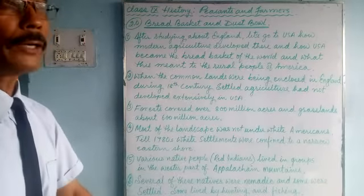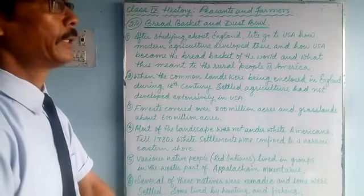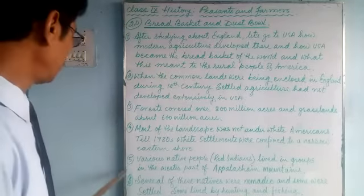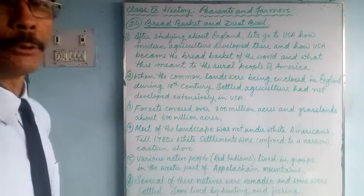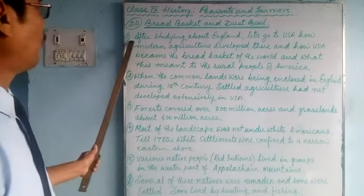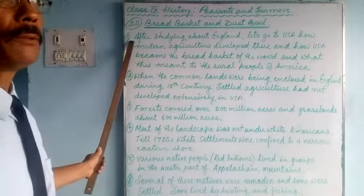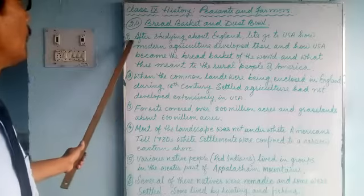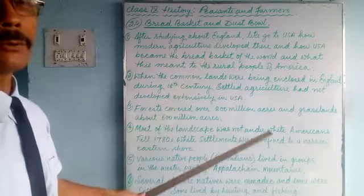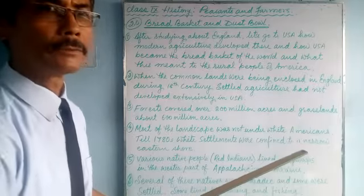Today we'll do section 2.0: the Bread Basket and the Dust Bowl. This is the next part we'll talk about. There are five to six points listed here and we'll go through them one by one.